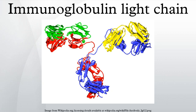Regarding structure, only one type of light chain is present in a typical antibody; thus the two light chains of an individual antibody are identical. Each light chain is composed of two tandem immunoglobulin domains.